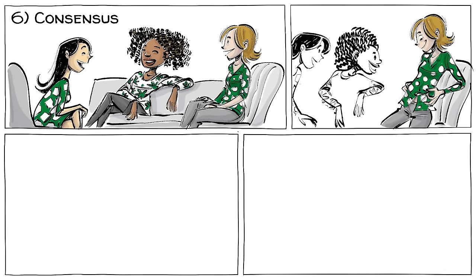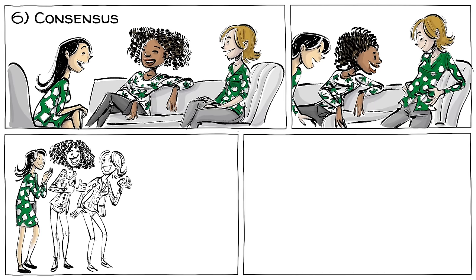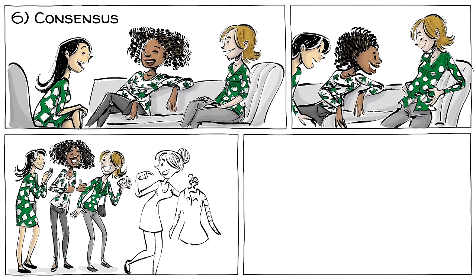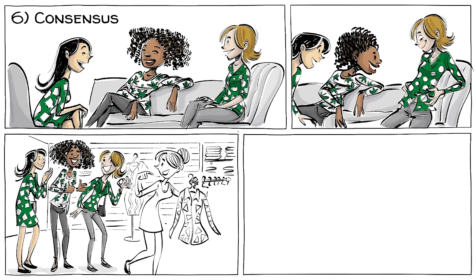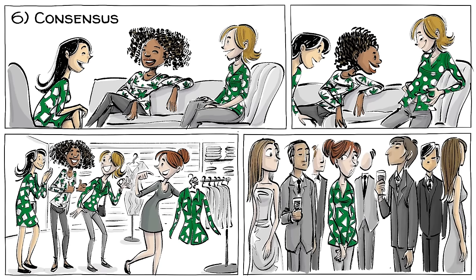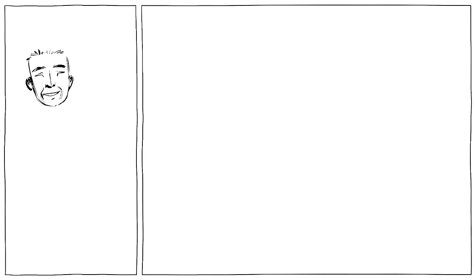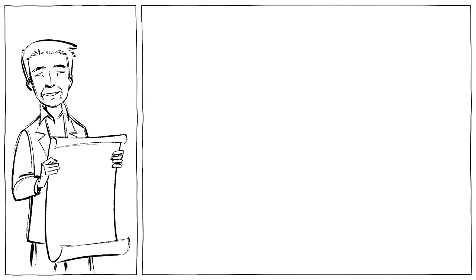The sixth is consensus. Humans are inherently social — they want to conform to the group. Social proof can therefore persuade people to commit to something they otherwise doubt.